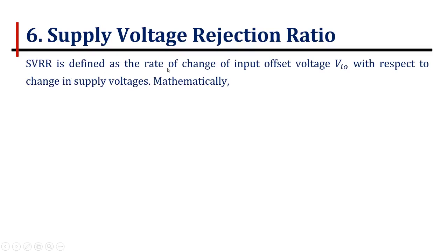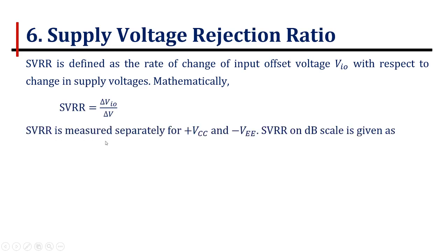Supply voltage rejection ratio: SVRR is defined as the rate of change of input offset voltage with respect to the change in the supply voltages. Mathematically, SVRR equals delta VIO upon delta V. SVRR is separately measured for positive VCC and negative VEE.